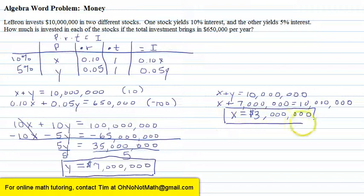So that's our answer. LeBron put 3 million into his 10% stock, 7 million into his 5% stock. And after one year, he earned $750,000. I hope that helps.